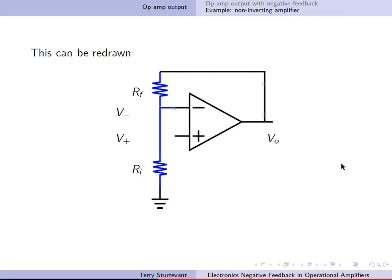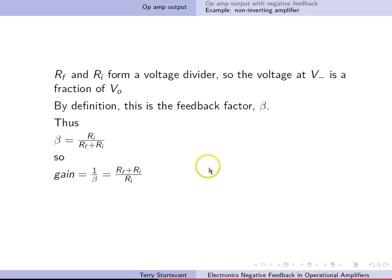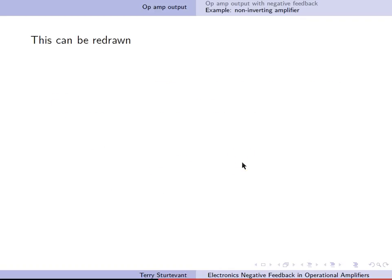So now RF and RI form a voltage divider, so that the voltage at V minus is a fraction of V out. By definition, this is the feedback factor beta. So beta is RI over RF plus RI, so the gain is 1 over beta is RF plus RI over RI, as expected.